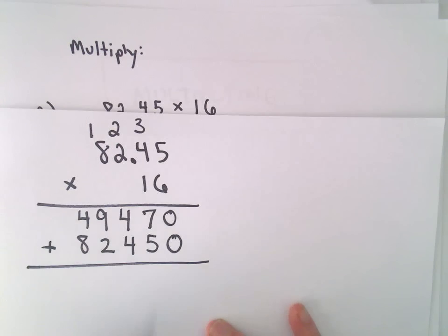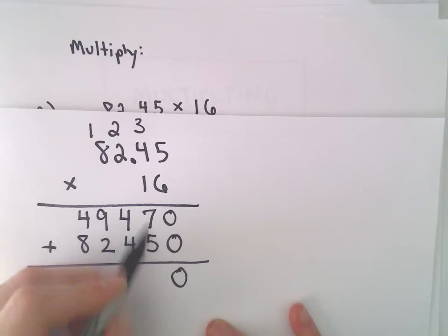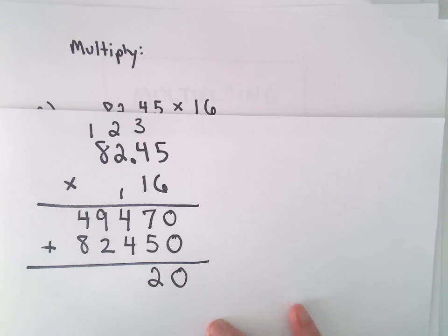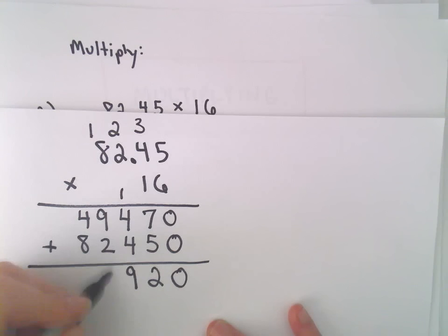I do my addition, 0 and 0 is 0. 7 plus 5 is 12, so we'll keep the 2, carry the 1. 1 plus 4 plus 4 will be 9. 9 plus 2 is 11. So let's see, 1 plus 4 is 5, plus 8 will be 13.